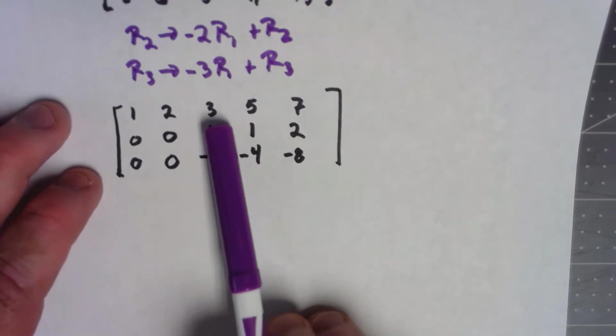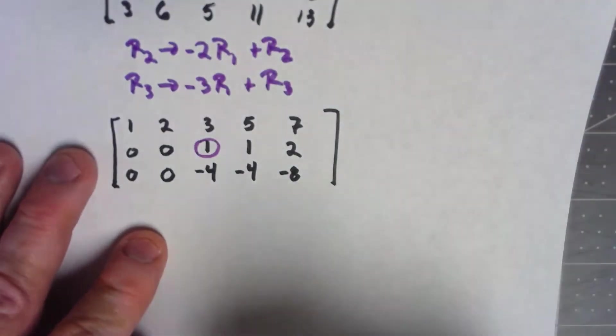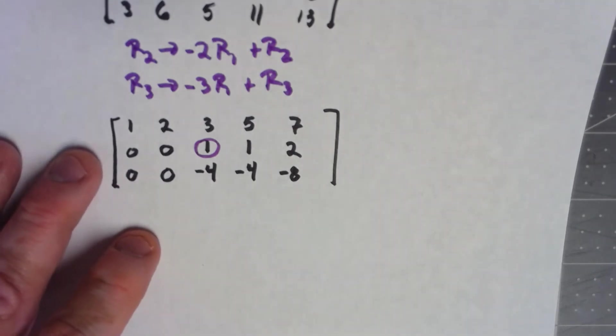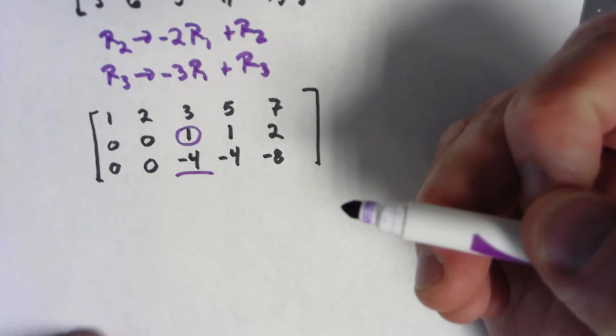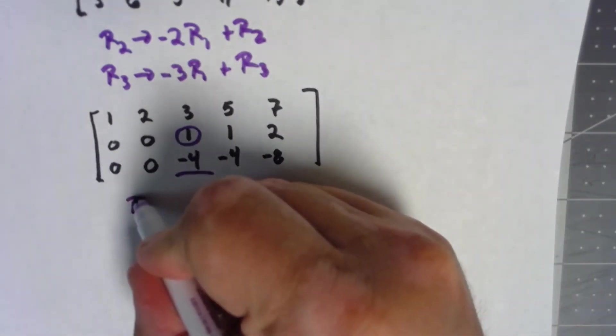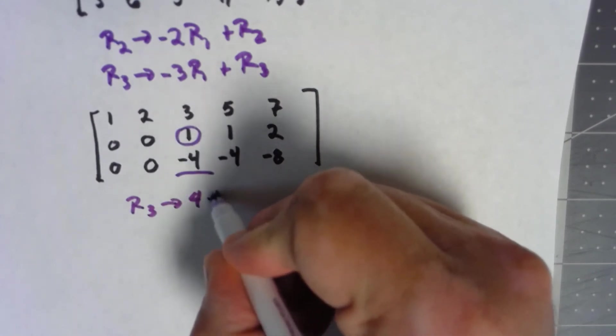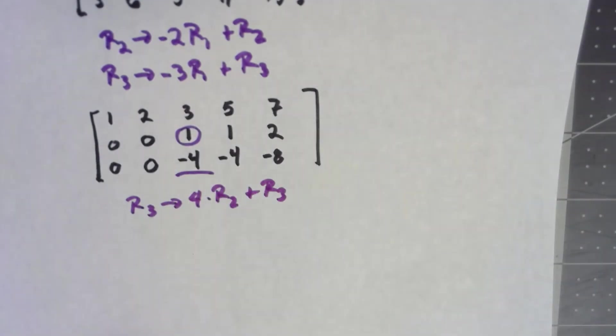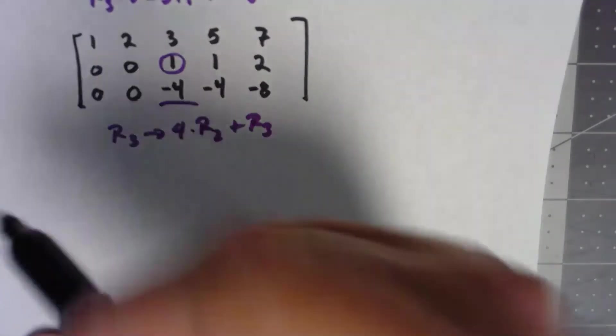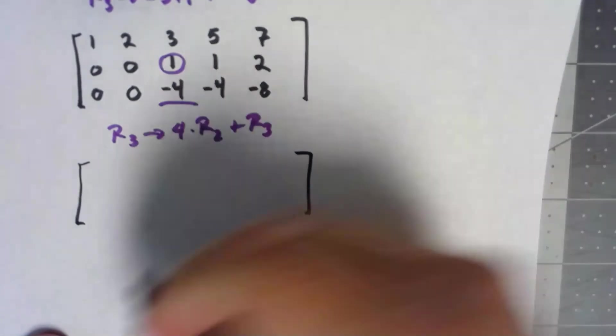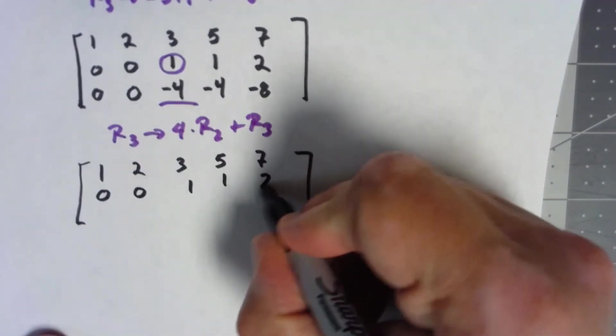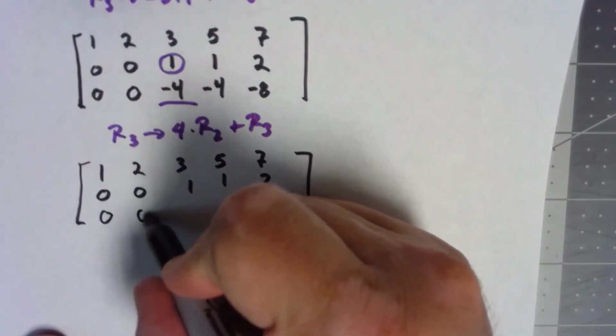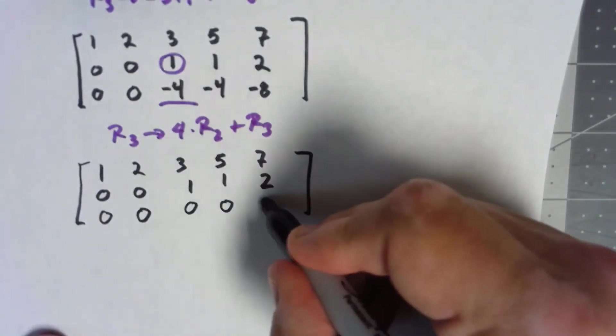Okay, so my next pivot is right here. I'm not actually going to go all the way to reduced row echelon form because I don't need to find my pivots. But I do want to go ahead and get it into at least echelon form. So I want to zero out the things below the pivot. So if I do row 3 is 4 times row 2 added to row 3, that doesn't affect rows 1 or 2. And everything zeroes out there.